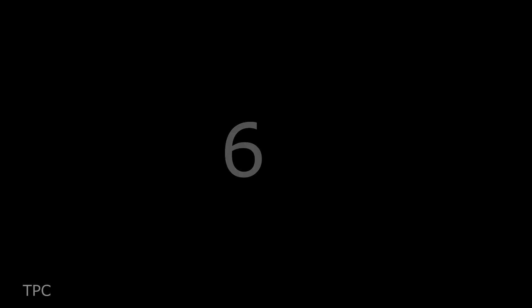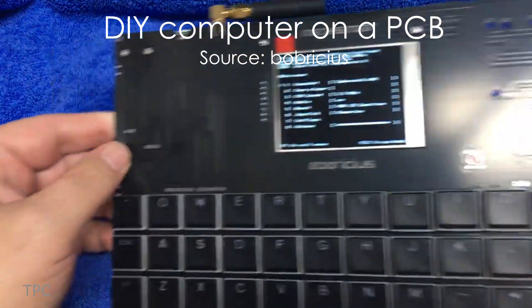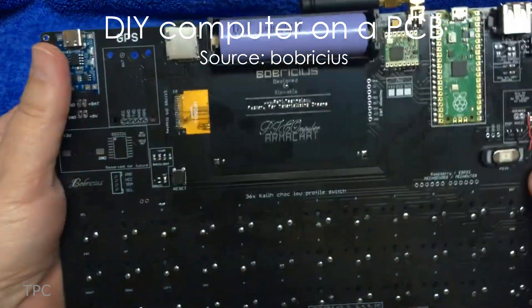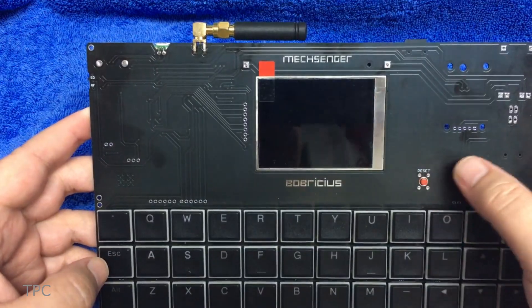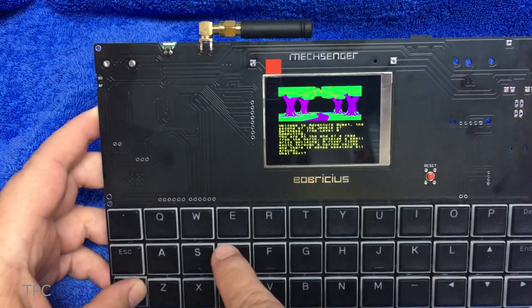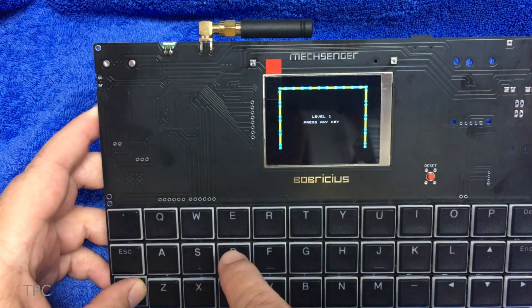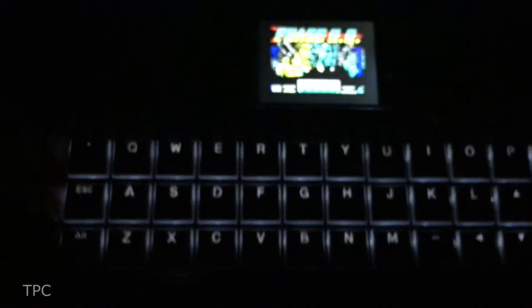Number 6. Our next project is a computer designed by Peter. He calls it MechSenger. It contains all the essentials, like a microcontroller, a battery charging circuit, an SD card, etc. But the best part is the backlit keyboard and tiny screen above it.